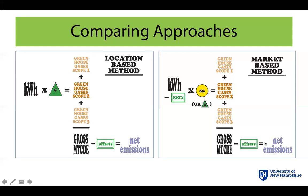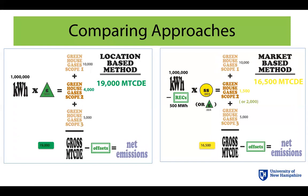The math ends up being the same as it was before — the 19,000 metric tons of CO2 for that sample campus with one million kilowatt hours would be the location-based total, and the market-based total would be 16,500, which is exactly how the math would have worked out before. So the math isn't actually changing necessarily — it's about what you're communicating about which emissions factor is being used, and it's also about the degree to which RECs are or are not being incorporated.